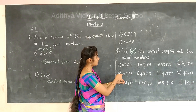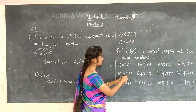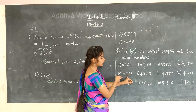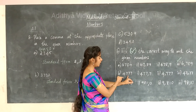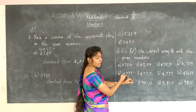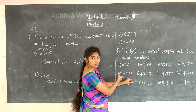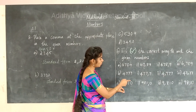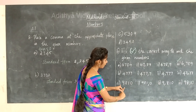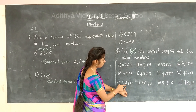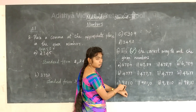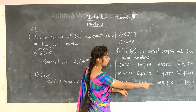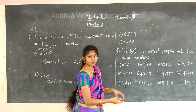Moving to the next sum — 4,777. The comma should be placed between hundreds and thousands. You are going to do this sum. The second option should be the correct answer. Think through and write the answer.